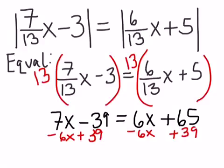And I will end up with, conveniently, on the left side just x, and on the right side, 65 plus 39 ends up giving me 104.